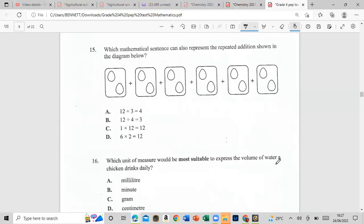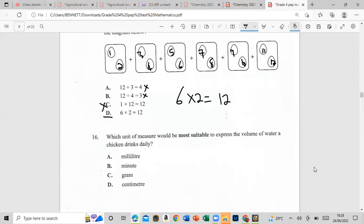Which mathematical sentence can also represent the repeated addition shown in the diagram? First, let us add and see how many eggs we get in total. That is the key. So we have 1, 2, 3, 4, 5, 6, 7, 8, 9, 10, 11, 12. So we're supposed to get 12 in total. Is it 12 divided by 3? No, we did not divide. One multiplied by 12? Is it one group of 12? No, it's not one group of 12, but it's six groups of two. So we have six groups of two, and that is equal to 12. So C, 6 times 2 equals 12.